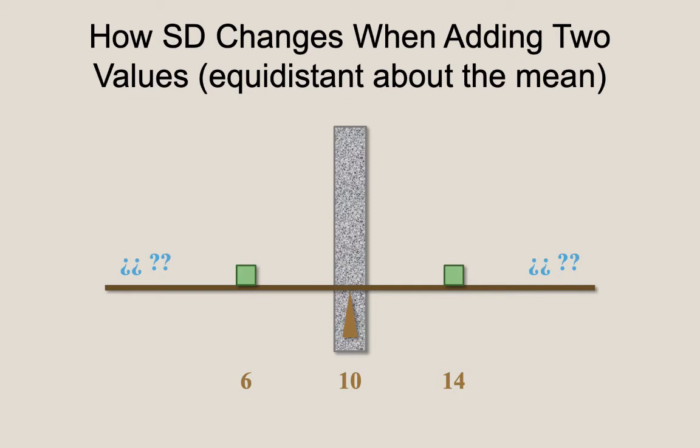Here's the mean at the balance point for the balance beam. Now, let's add our new values at 6 and 14, points that are equidistant away from the mean, equidistant from the balance point. Well, if we look at how far these values are from the mean, ignoring direction for a moment, we see that they are both exactly one standard deviation away from the mean.